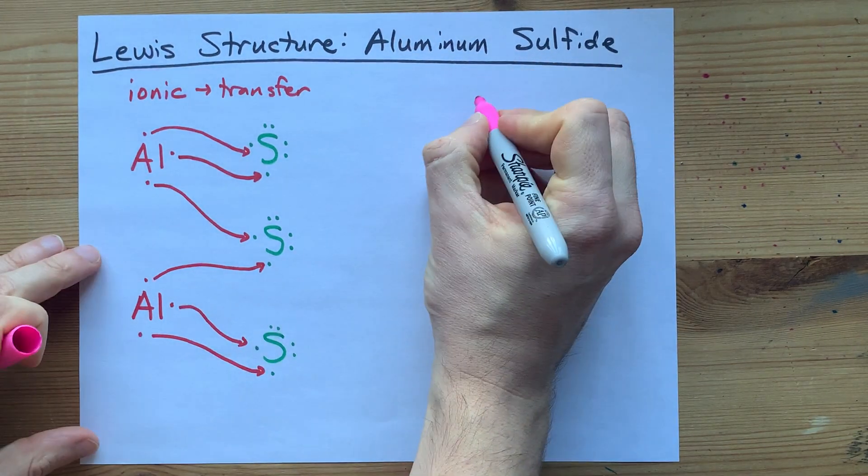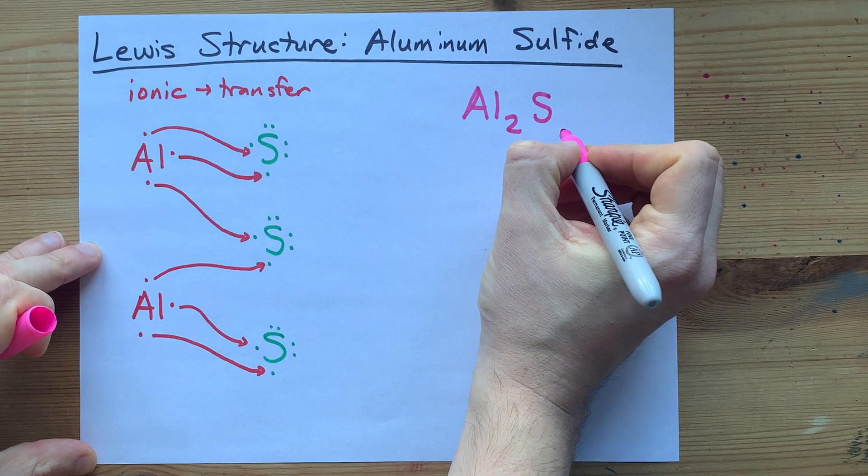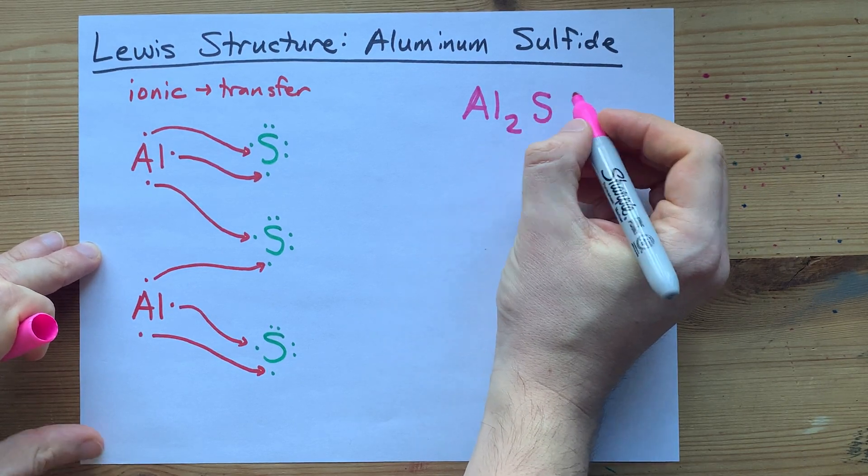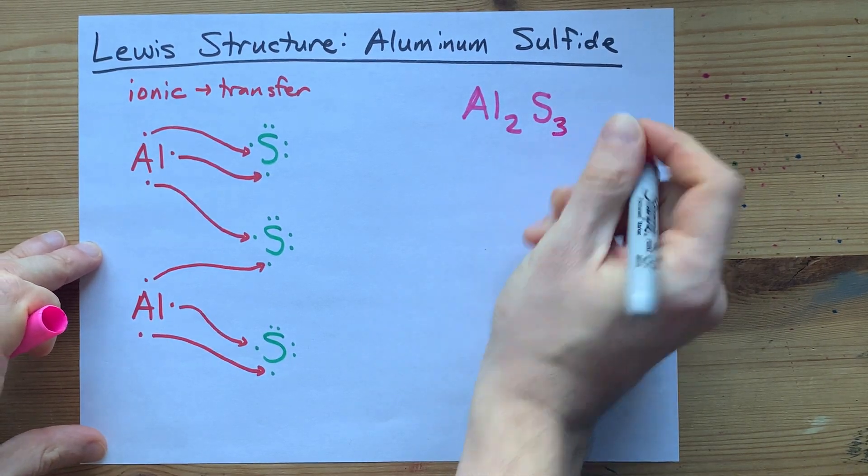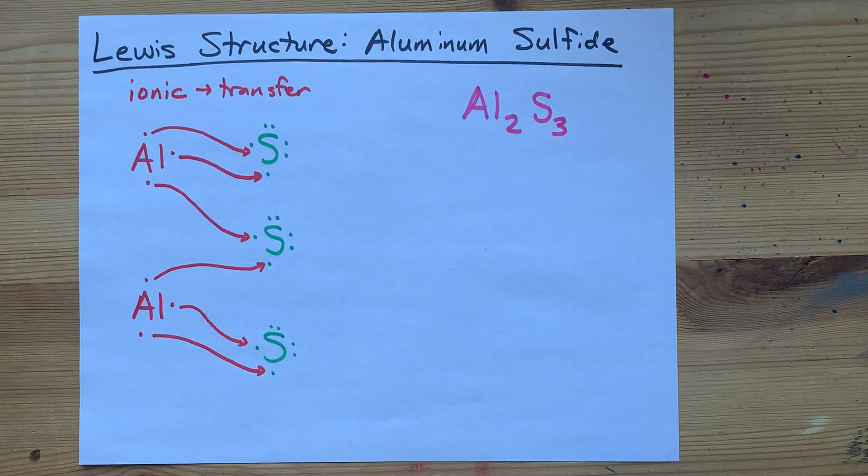Perfection. What you'll notice is that you have two aluminums giving its electrons away across three sulfurs. And so the chemical formula for aluminum sulfide is Al₂S₃.